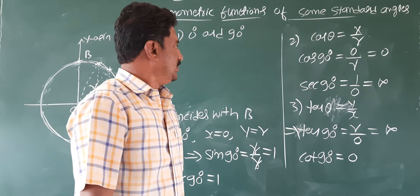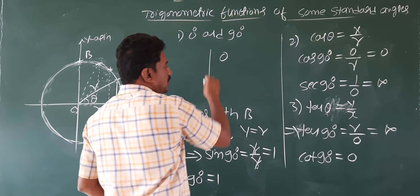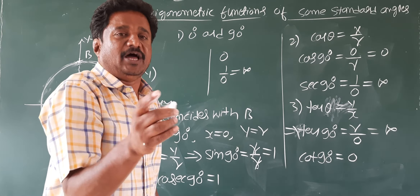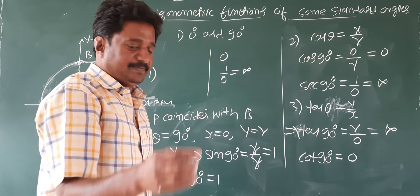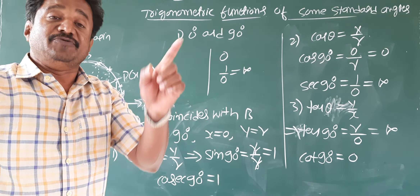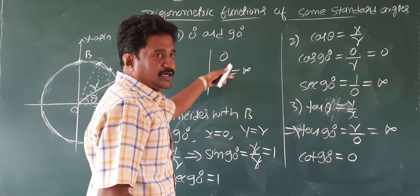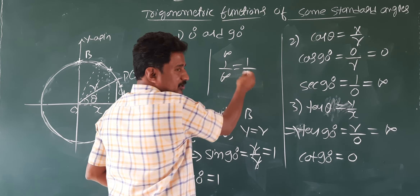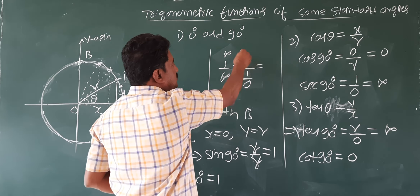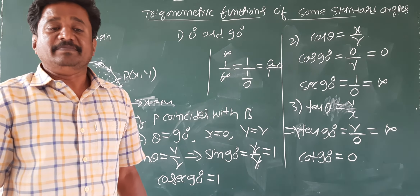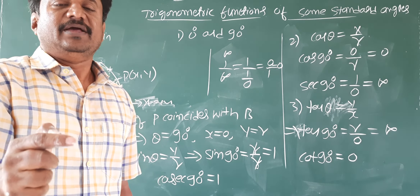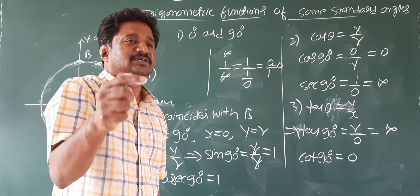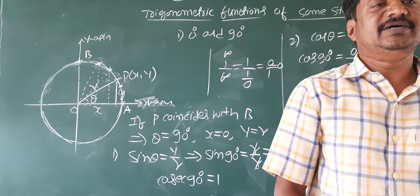Keep this in mind: reciprocal of zero is infinity, and reciprocal of infinity is zero. Reciprocal of zero means 1 by 0, which is infinity. Reciprocal of infinity means 1 by infinity, and number by infinity is zero. I hope you understood, students. I'll remind you of these things which I discussed in the next class. Thank you.